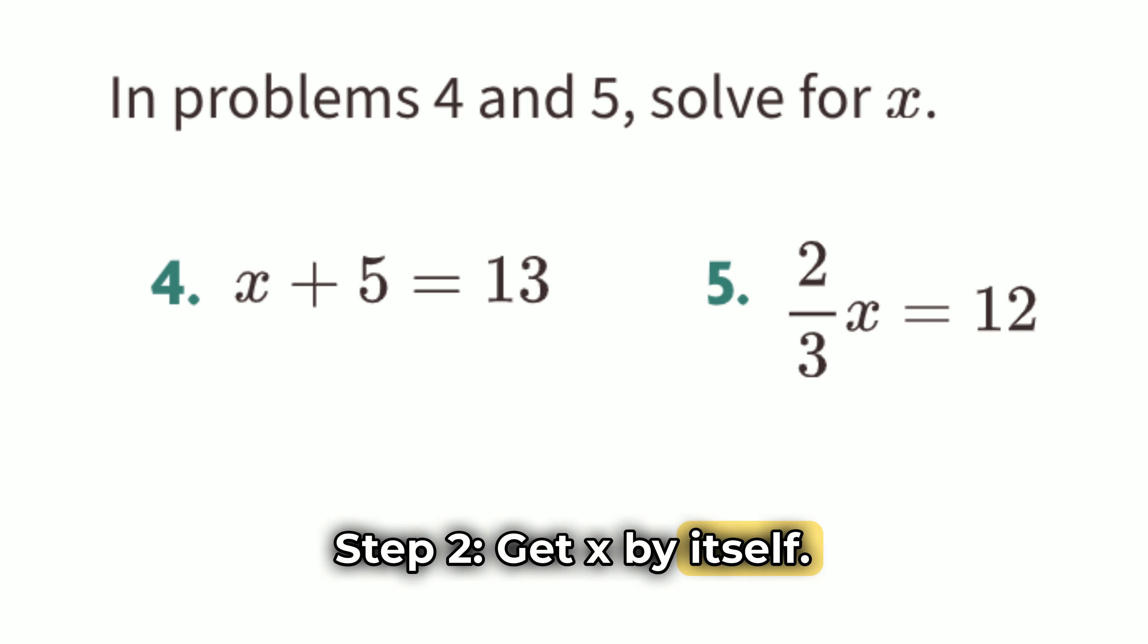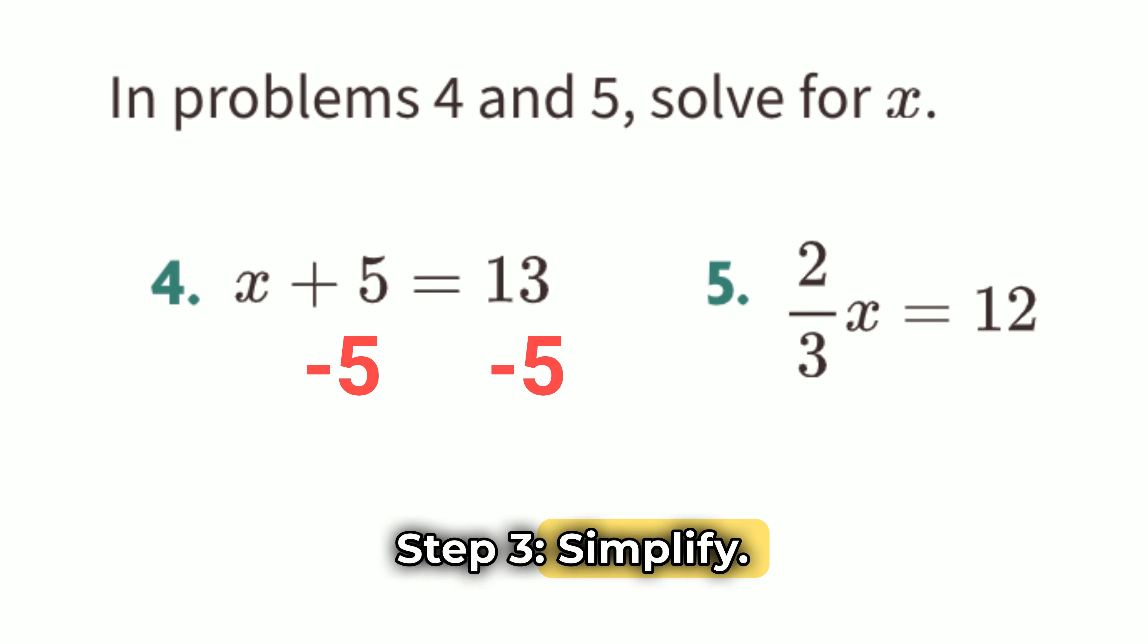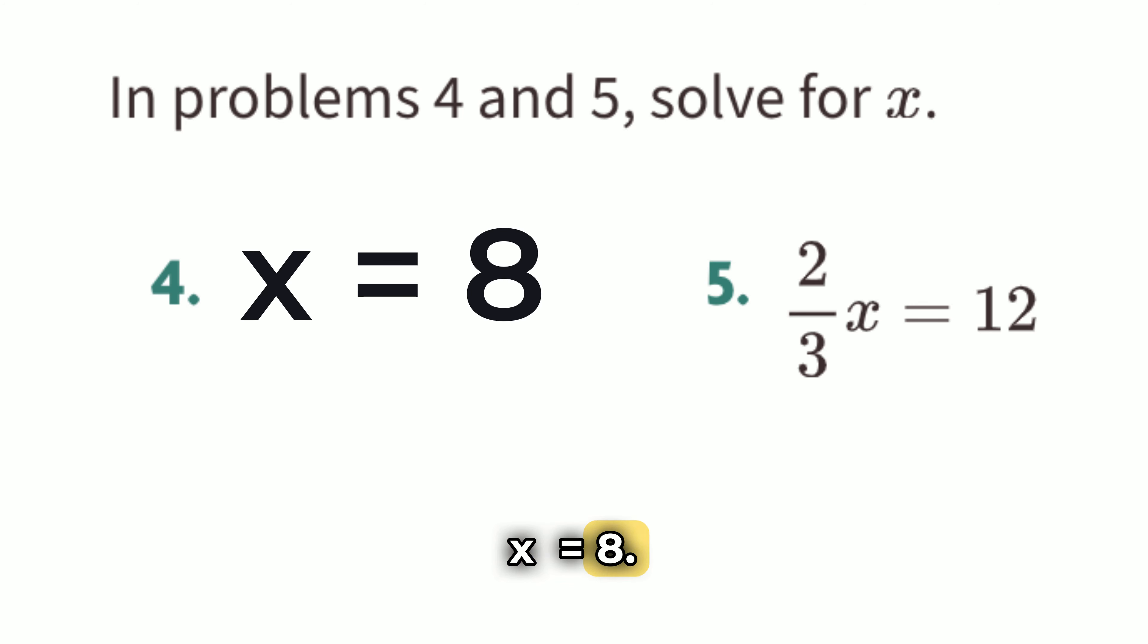Step 2. Get x by itself. To solve for x, we want to undo the plus 5 part of the equation. To do this, we subtract 5 from both sides of the equation. Whatever we do to one side, we have to do to the other side to keep the equation balanced. So, subtract 5 from both sides. x plus 5 minus 5 equals 13 minus 5. Step 3. Simplify. On the left side, plus 5 and minus 5 cancel each other out, leaving just x. x equals 8.